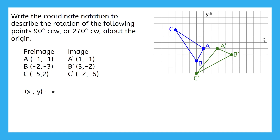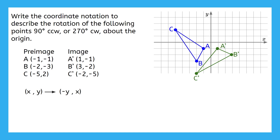The x values from the preimage moved to become the second coordinate in the image. We can show that in our notation by writing x in the location where y normally goes. We can also see that the original y values moved to become the first coordinate in the images, but also changed signs. We can show this in our coordinate notation by writing negative y. This notation applies to a 90 degree counterclockwise rotation and a 270 degree clockwise rotation.